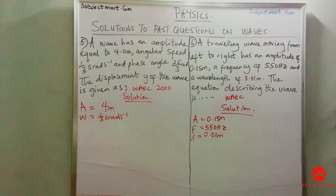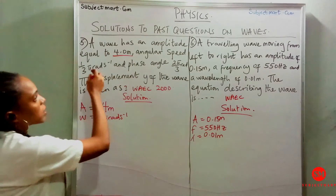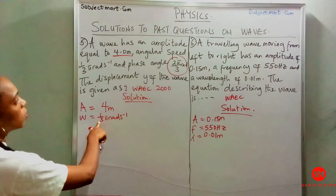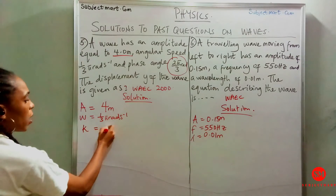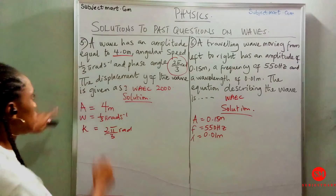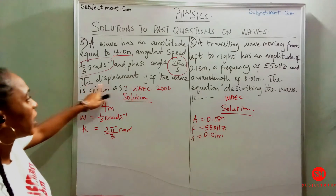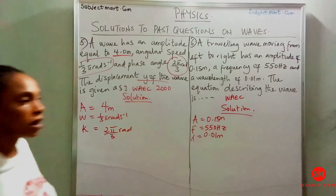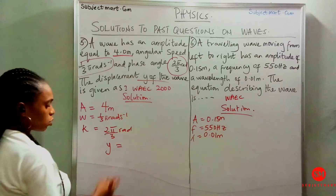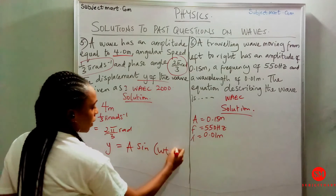Question 5 says a wave has an amplitude equal to 4.0. The phase angle k equals 2π over 3 radians, and the angular speed w equals 1 over 3 π rad/s. The question asks us to find the displacement y of the wave — indirectly they are asking us to write the wave equation of the form y equals A sine(wt minus kx).